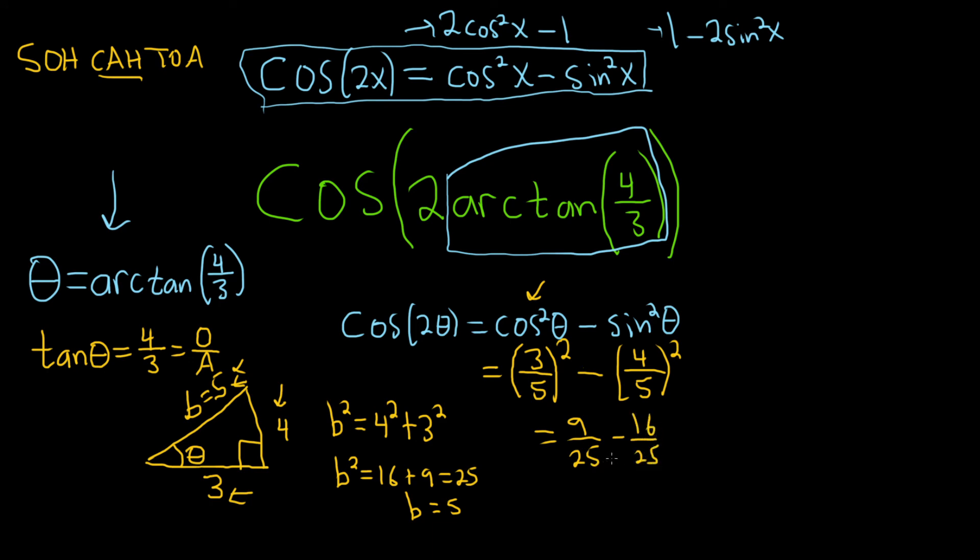This will be equal to 9 over 25 minus 16 over 25. And how convenient, they have the same denominator. So 9 minus 16 is negative 7 over 25. Really nice problem. A little bit harder than some of the other problems you're probably doing if you're studying this stuff. It's kind of fun though. You get to use an identity and you get to draw a triangle. And it's kind of nice. I hope this video has been helpful.